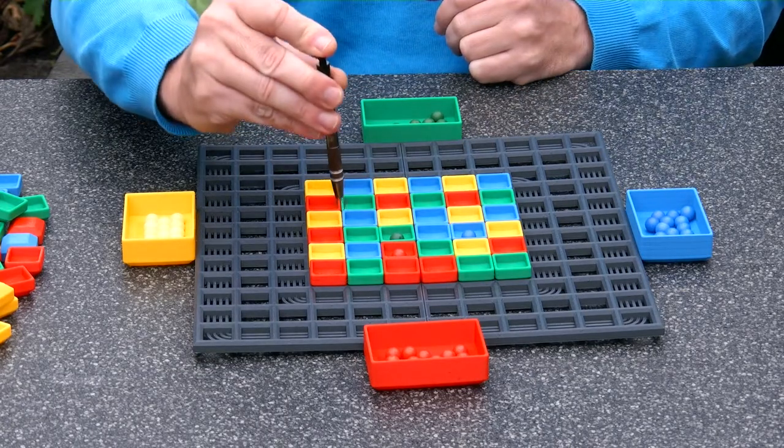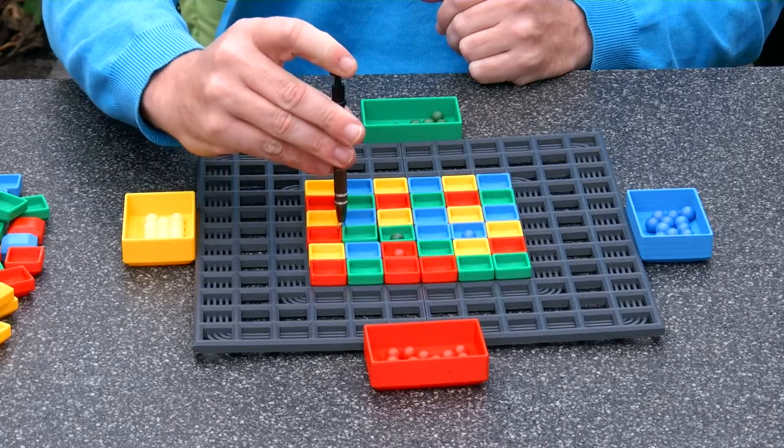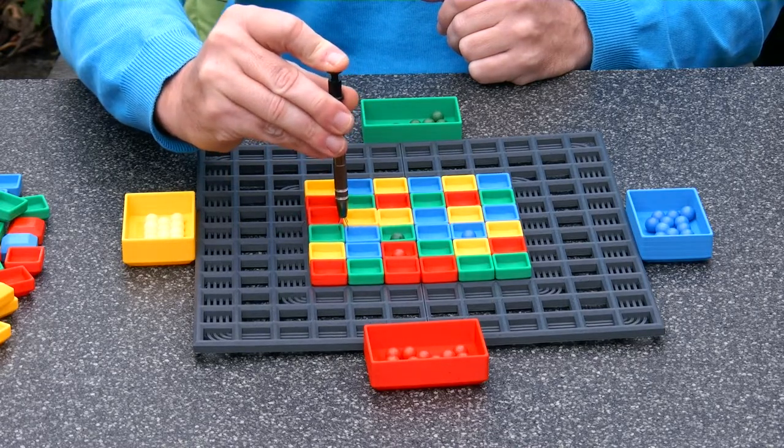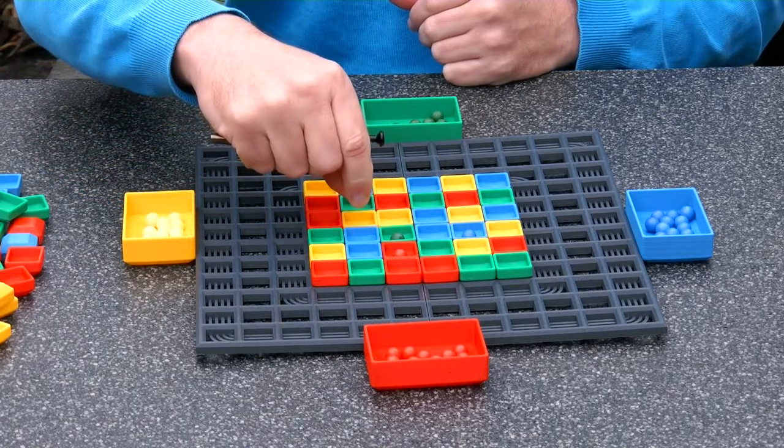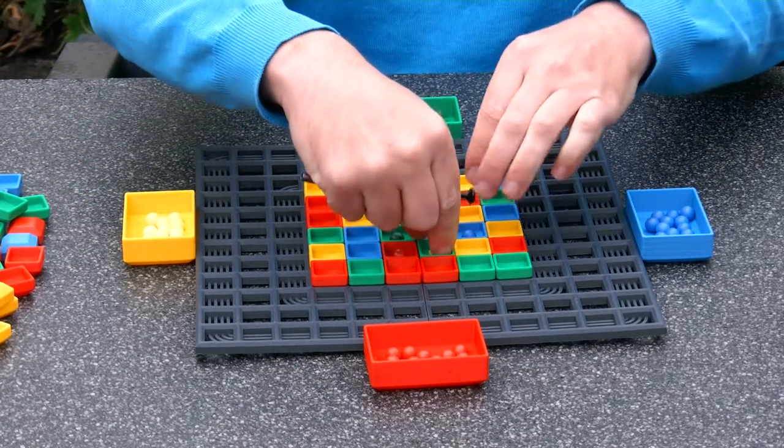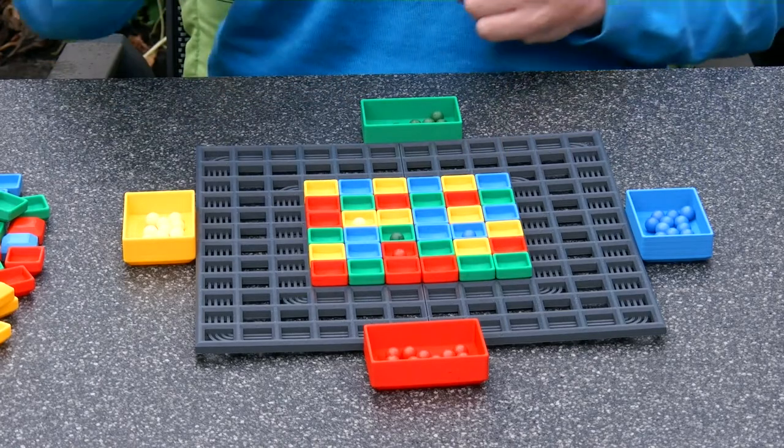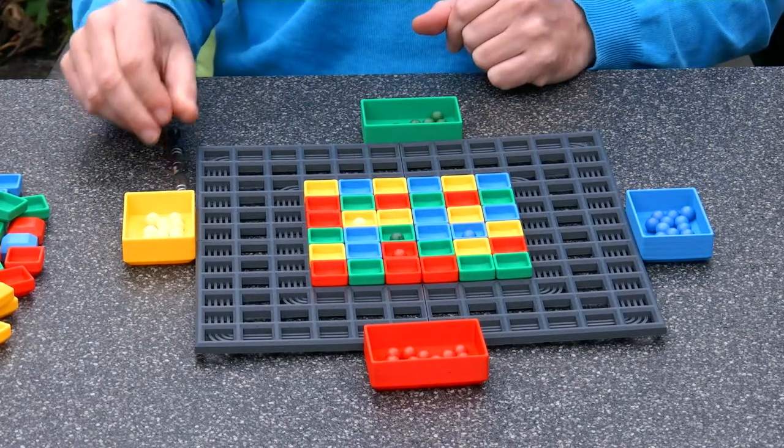So instead the yellow player makes another move. Maybe this one. And that's a ball. Oh. Here we go. And so on.